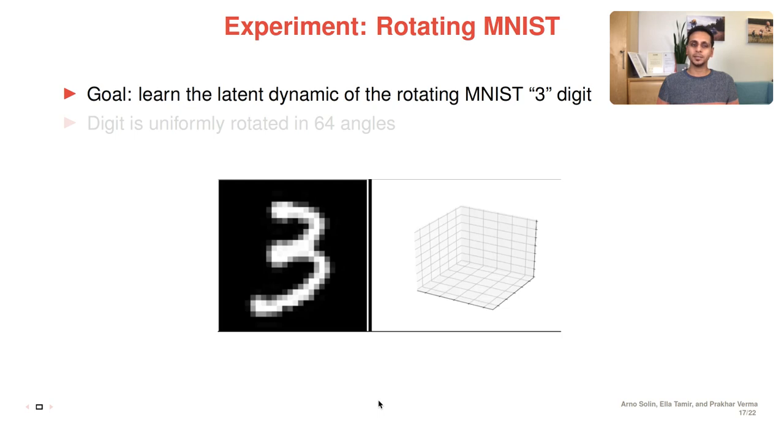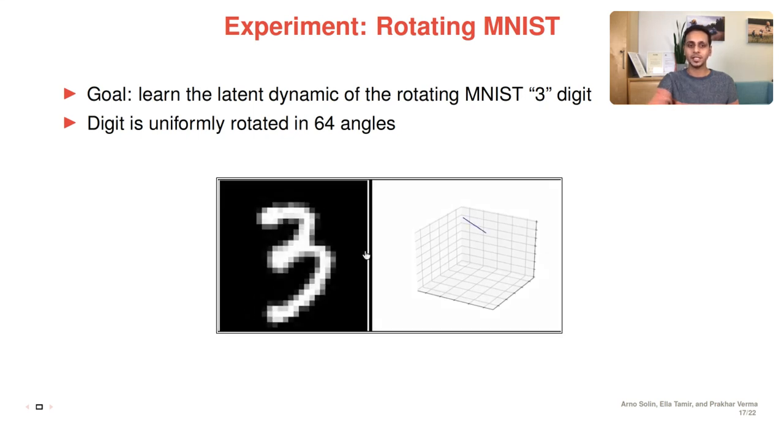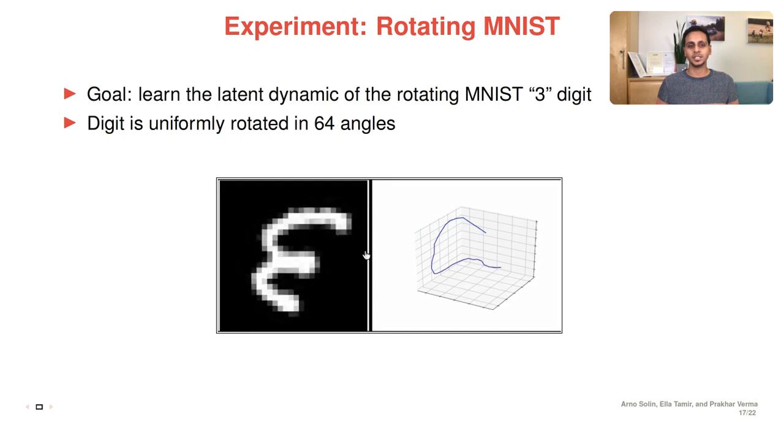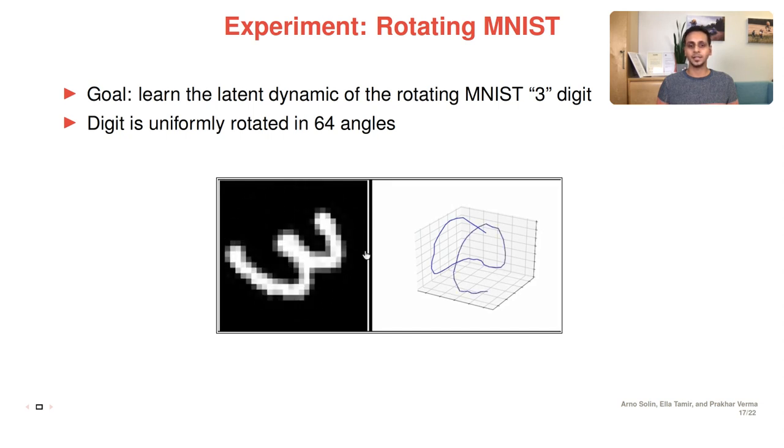The goal for the rotating MNIST is to learn the latent dynamics of the rotating MNIST digit in this experiment, digit 3. The digit is uniformly rotated in 64 angles. The video showcases the sample from the dataset where on the left, we can see the digit and the right, the latent trajectory.